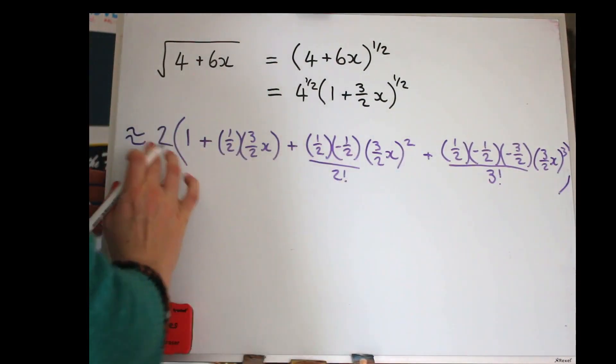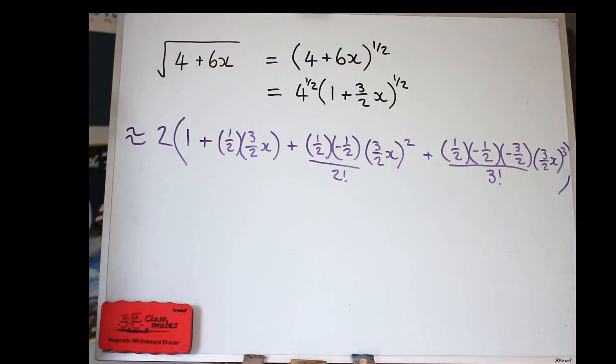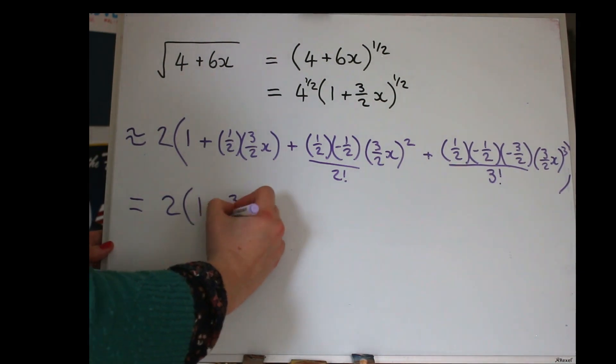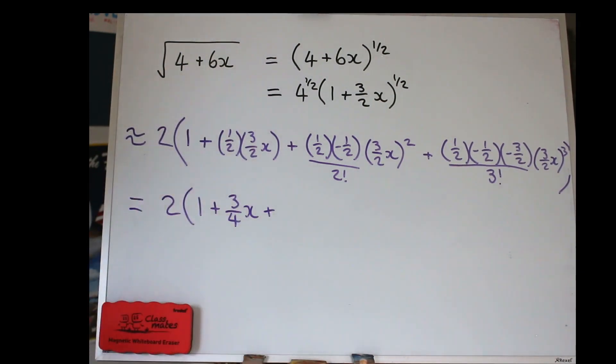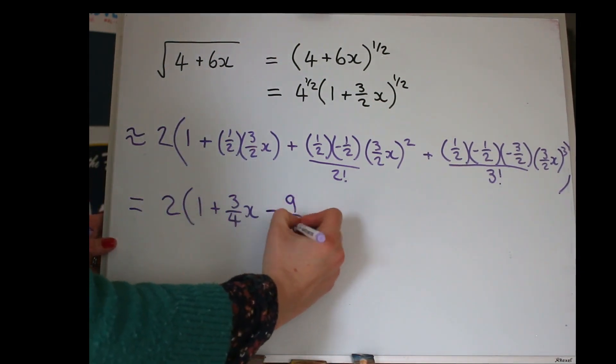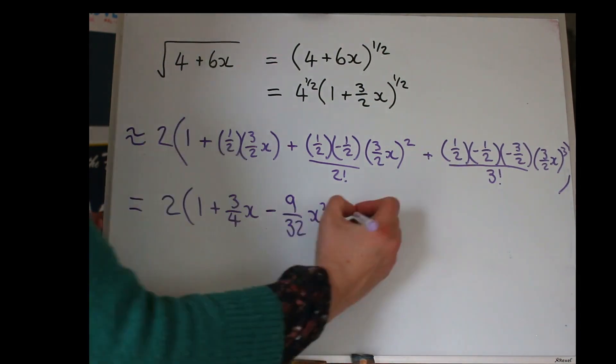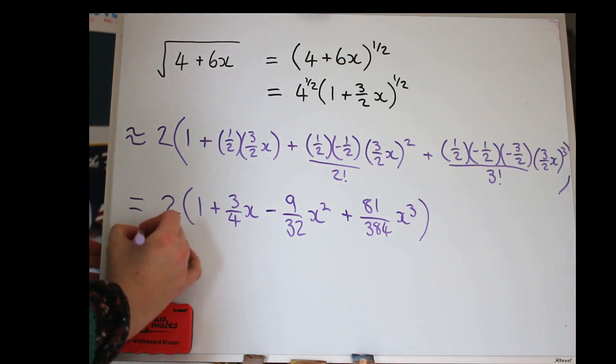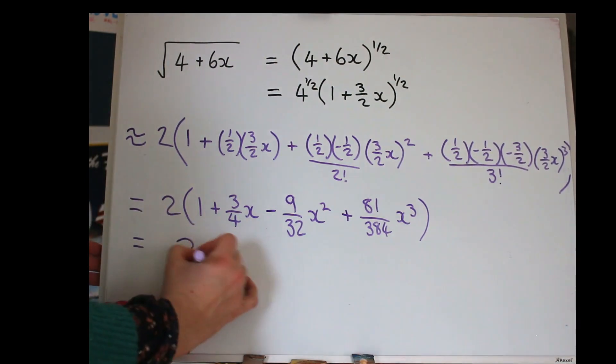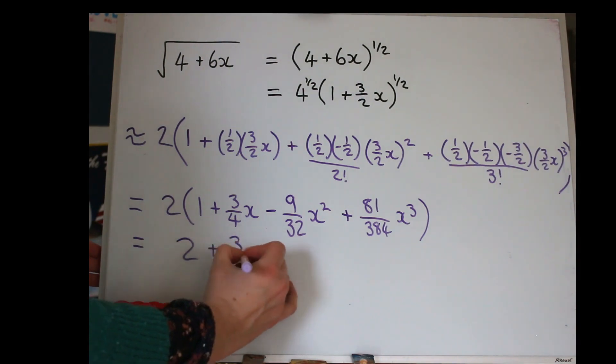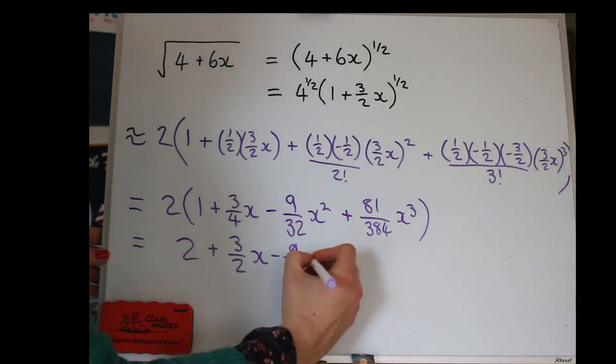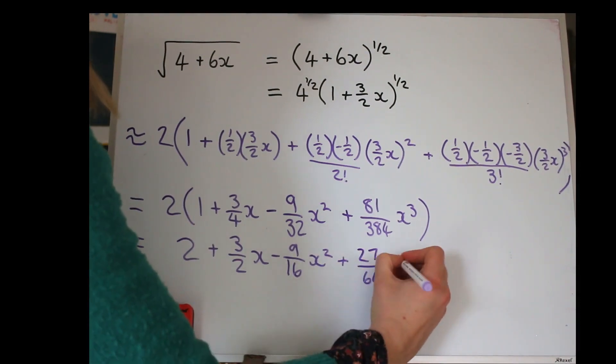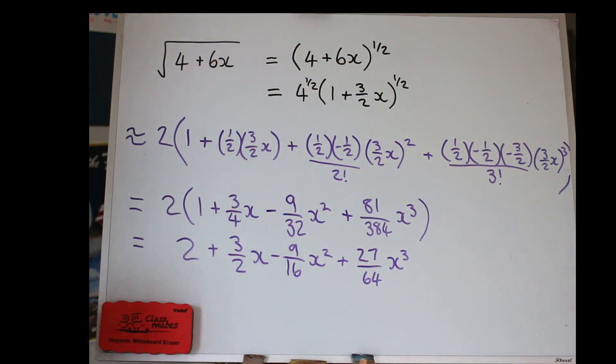Just squeeze that on. So, it's 2 times all of that. Let's try and simplify. OK. We can multiply everything by 2 if we want to. Nice. Well done if you've got that.